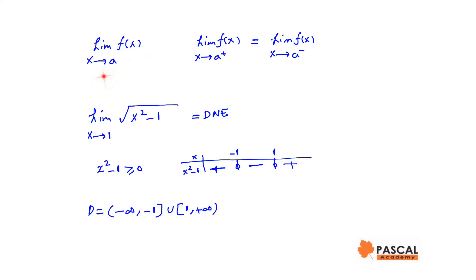In this video, we are going to review left side and right side limits of f of x as x approaches a. We know the limit of f of x as x approaches a exists if and only if both the right side and left side limits of f of x as x approaches a exist and they are equal.